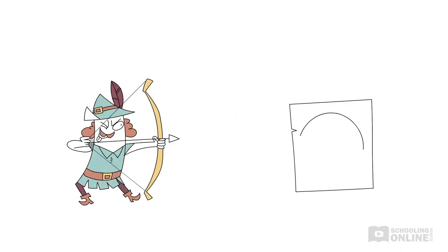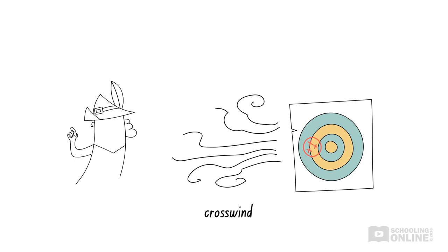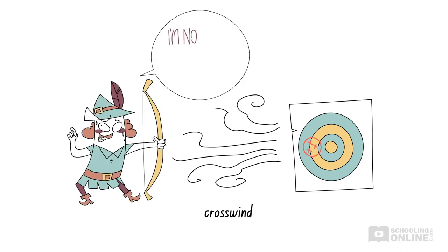To help understand what this means, let's go back to Robin Hood at the archery competition. This time, a strong crosswind is blowing to the left. Robin Hood still aims for the bullseye, but the wind blows each of his arrows to the left, so he always hits slightly left of the bullseye.